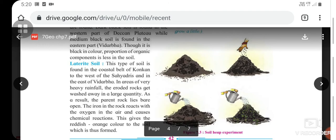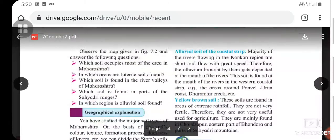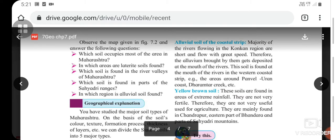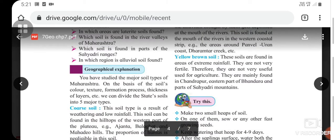Fourth is alluvial soil of the coastal strip. Majority of the rivers flowing in the Konkan region are short and flow with great speed. Therefore, the alluvium brought by them gets deposited at the mouth of the rivers. This soil is found at the mouth of rivers in the west, in the mouth of reservoirs in the western coastal strip. Examples are areas around Panvel, Uran coast, Dharamtar creek, etc.